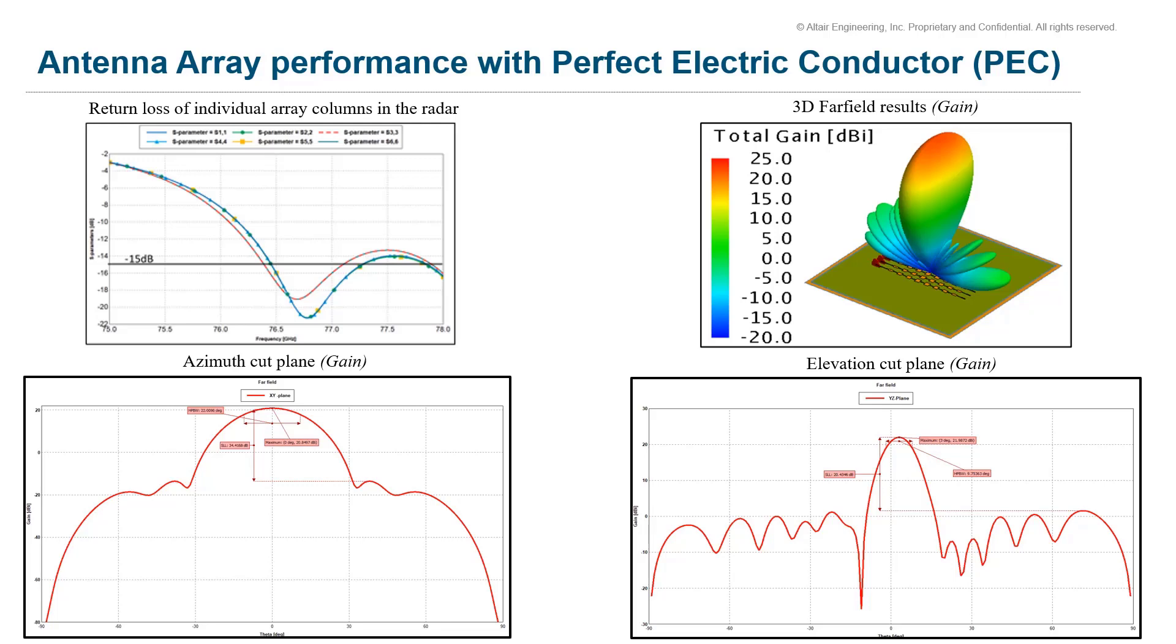The maximum gain achieved in the azimuth plane is around 21 dB, whereas in the elevation plane, it is around 22 dB because of the beam tilt. The results suffice the conditions for a medium range radar as we had discussed in the previous slides.